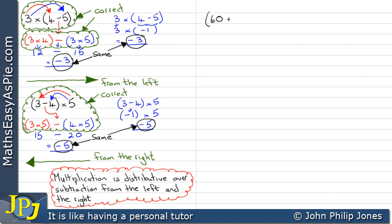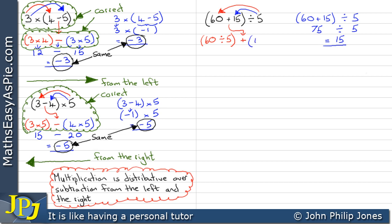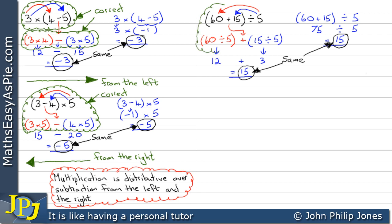Here I've got the sum of 60 plus 15 divided by 5. If I do that over here I can see I get 75 divided by 5 which gives us 15. Now if we take the 60 divided by 5, bring the plus down, and take the 15 and divide that by 5 — that gives me 12 and this gives me 3, so I get the result of 15. We can see in fact that these are the same, which shows this is correct. We've done that operation from the right.